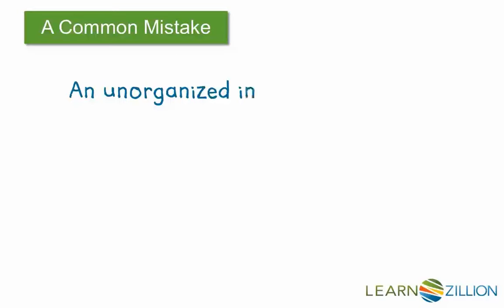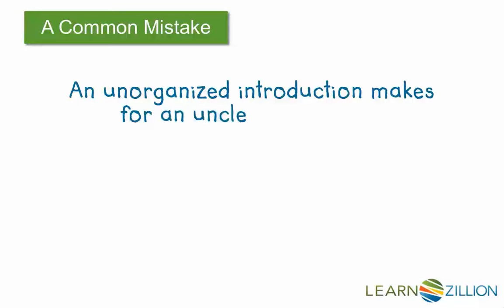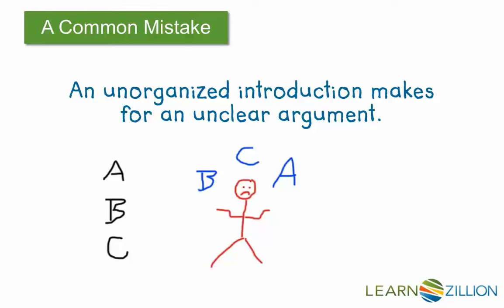A common mistake that writers make is that they have an unorganized introduction, which makes for an unclear argument. A logical format would be A, B, C. Without a logical order, the reader might be left juggling where you're actually headed with your argument, which weakens the argument. It creates a lot of question marks. We want to have a well-organized, strong argument. It all starts with the introduction.